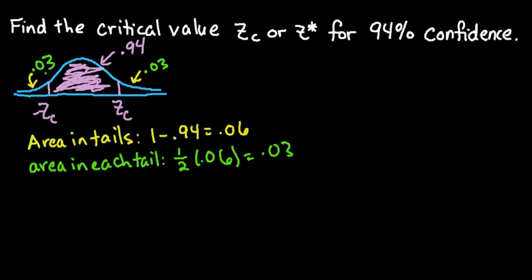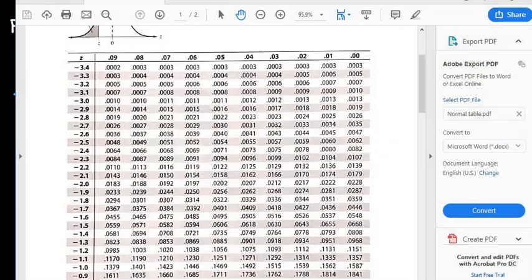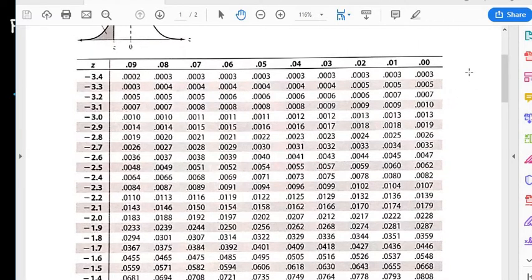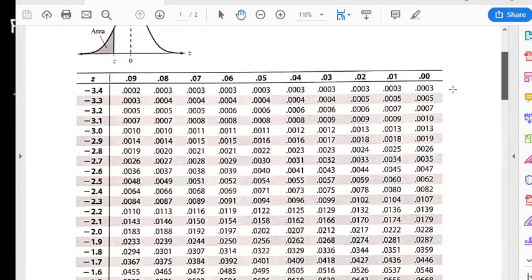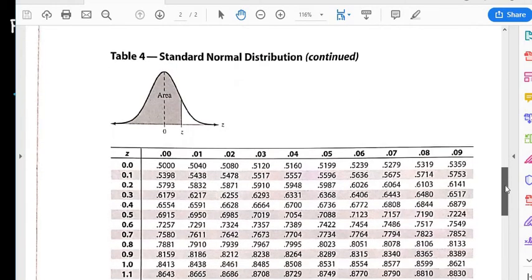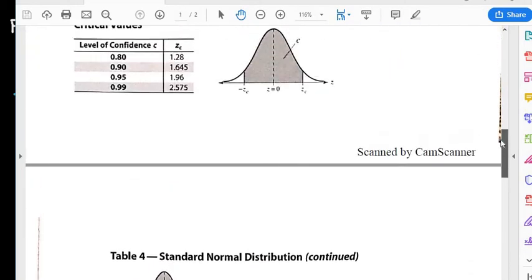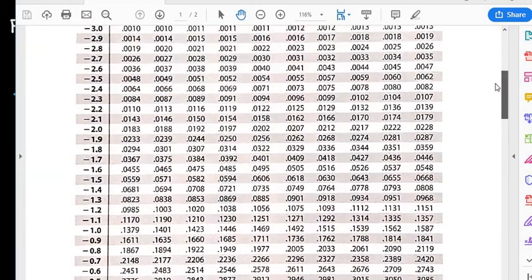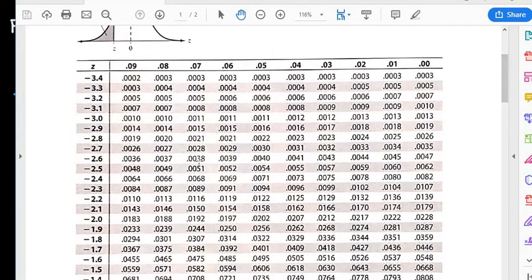So now what we need to do is get our normal table. I just have a simple normal table here. I like the way that this one is laid out because at the top, it counts down on this side. But then when I get to the positive side, it counts up. So it just makes it easier to read, in my opinion.